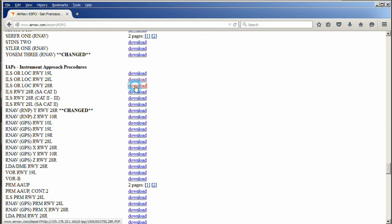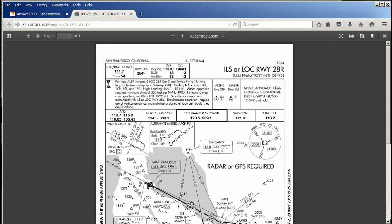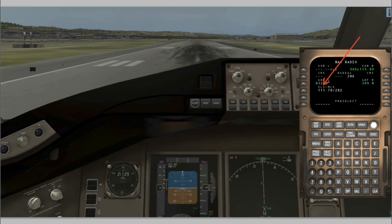Here we are — ILS Localizer Runway 28 Right. We click on that and download it. Here is our approach plate. I've blown up the approach plate and cut it in half so you can see it better. We want to find our localizer frequency, which is located right here. The localizer frequency for Runway 28 Right at San Francisco is 111.7, so we're going to tune our nav radios to that frequency.